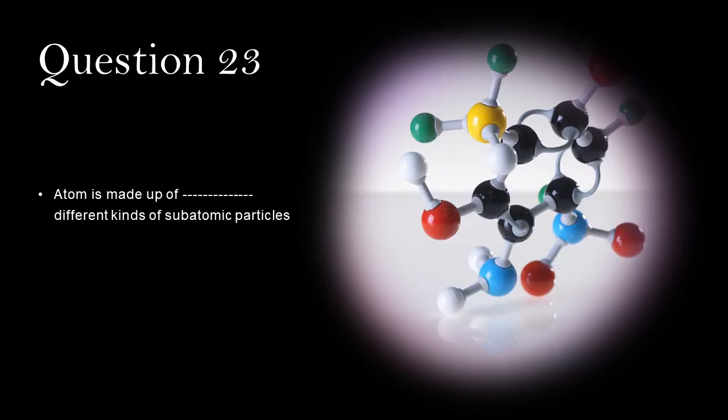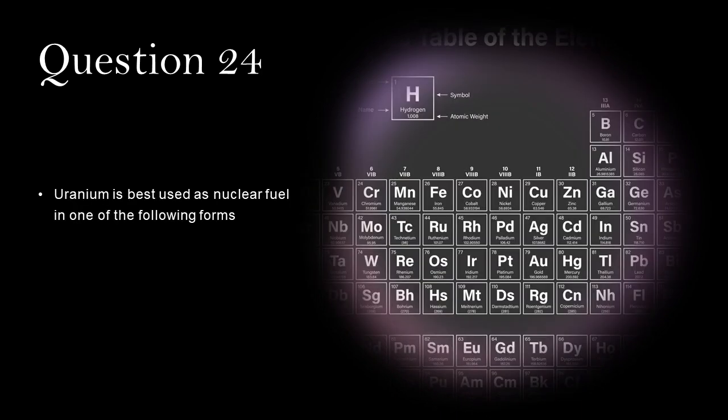Atom is made up of 3 different kinds of subatomic particles. Uranium is best used as nuclear fuel in one of the following forms: U-235.